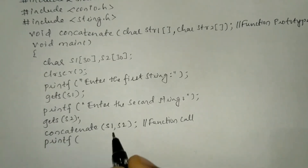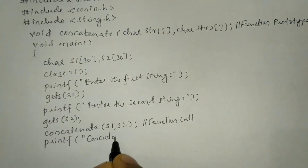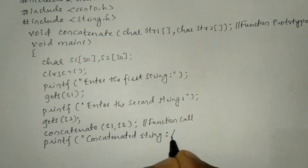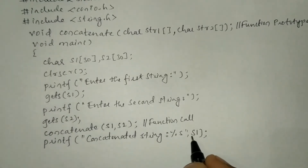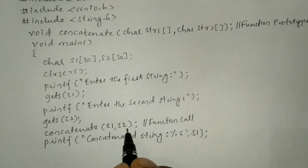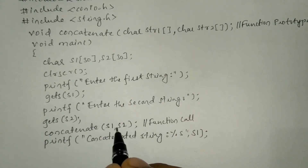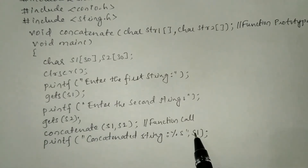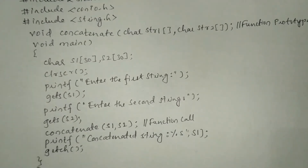Now I'm going to write a printf statement. In the double quotation mark I write 'concatenated string %s', followed by s1. Why s1 and not s2? Because the second string comes and joins at the end of string one — after combining string two with string one, the new string is stored in s1. That's the reason we use s1 here. Now let us write the getch function and then the curly closing brace.